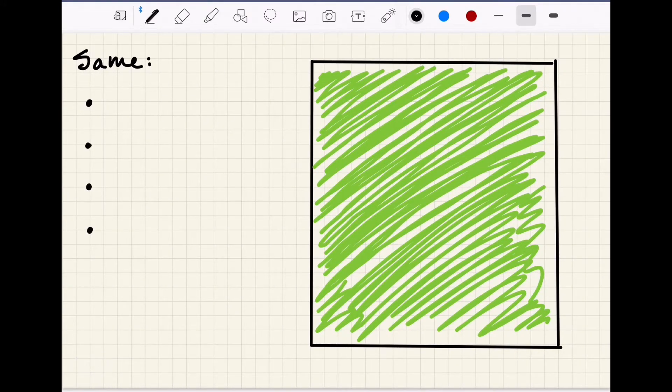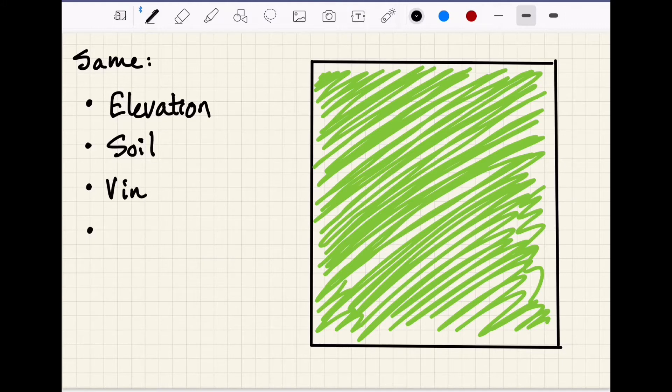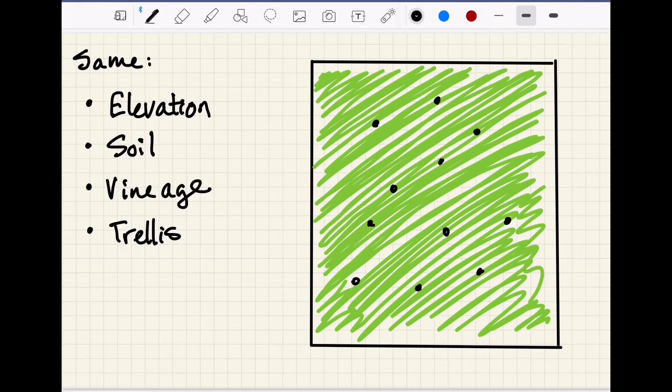Let's say that you have a vineyard block with very little variation. It's all the same elevation, the same soil type, all the vines are the same age, they're all in the same training system, and so on. In this case, if we take a well-distributed, fairly quote-unquote blind sample, we should be able to capture that limited amount of variation pretty easily.